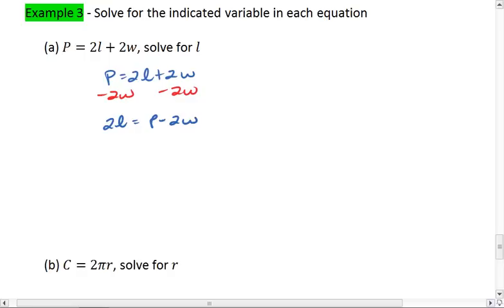Now we want to divide both sides by 2. So we're left with L equals P minus 2W all over 2. Make special note, these 2s do not cancel.